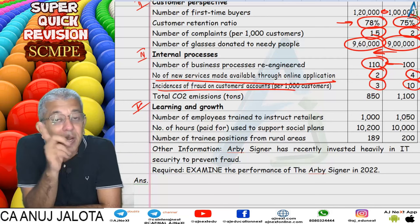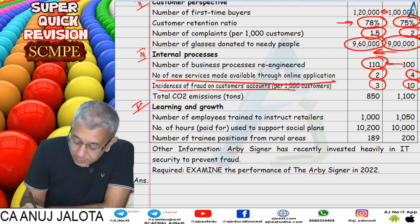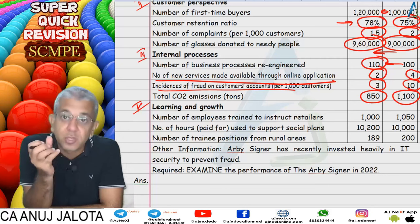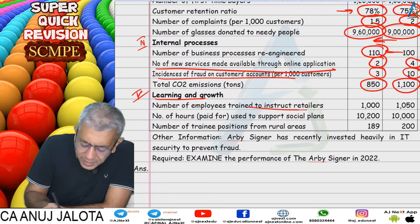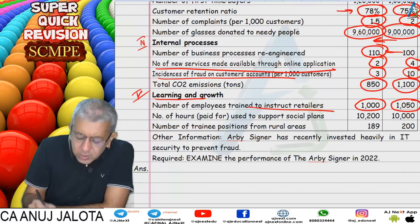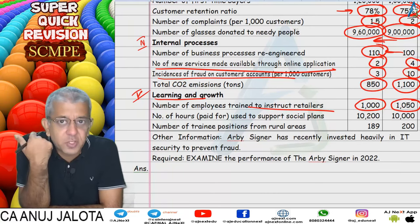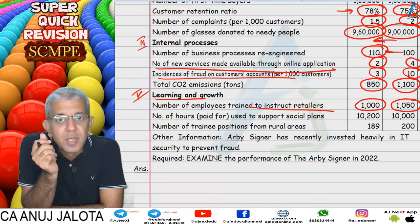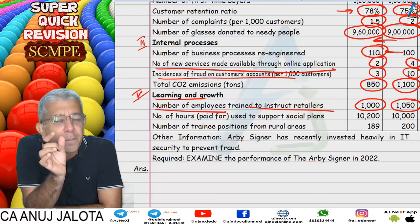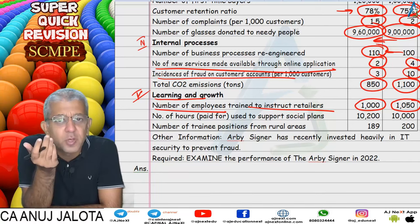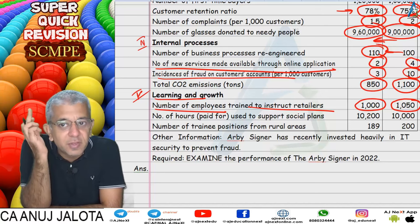Number of new services made available online is slightly a problem — target was 4 services, achieved only 2. The company should find out why. Incidences of customer fraud: target was 10, reduced down to 3 — that's very good, likely because of the heavy IT investment made. Carbon emissions are also falling — good. For learning and growth, number of employees trained to instruct retailers: target 1050, achieved only 1000 — performance is slightly bad.